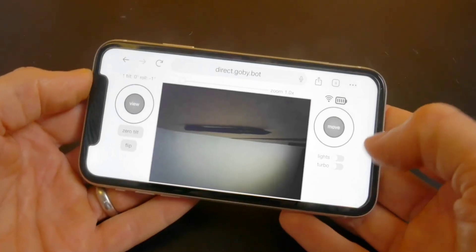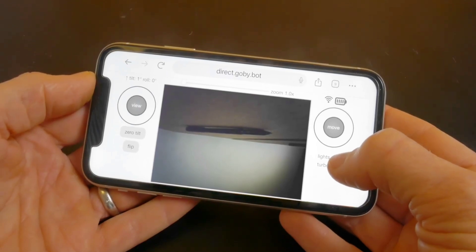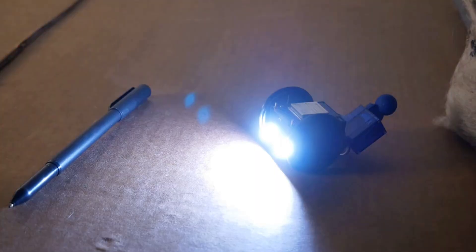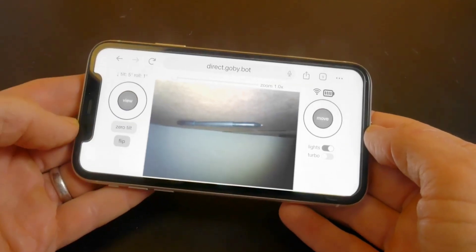After initially providing your home Wi-Fi info, operating the Gobi is as simple as powering it up, setting it down, and using your smartphone to scan a QR code that appears on the robot's top-mounted OLED screen.